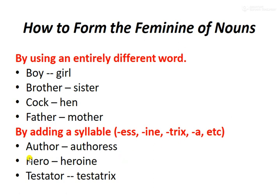Another way to form the feminine is by adding suffixes. For example: author becomes authoress — here we add ESS. Hero becomes heroine — here we add INE. Testator becomes testatrix — here we add TRIX. There are many different words, and these are some examples of how suffixes are used to form the feminine.